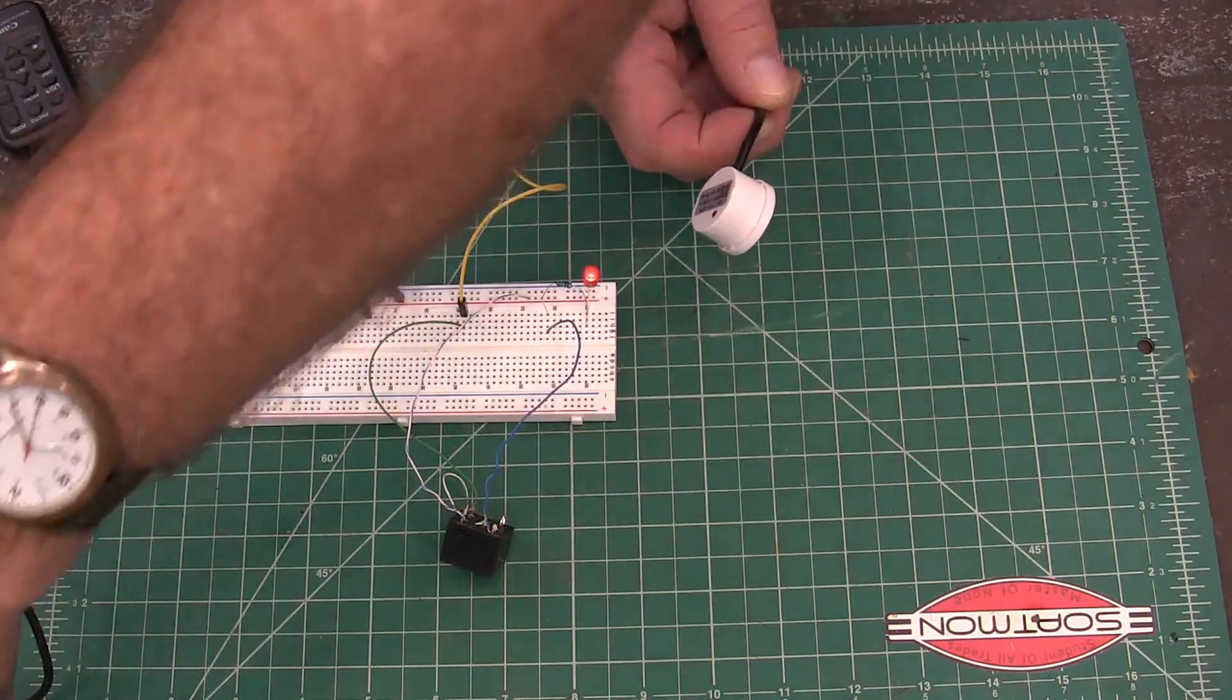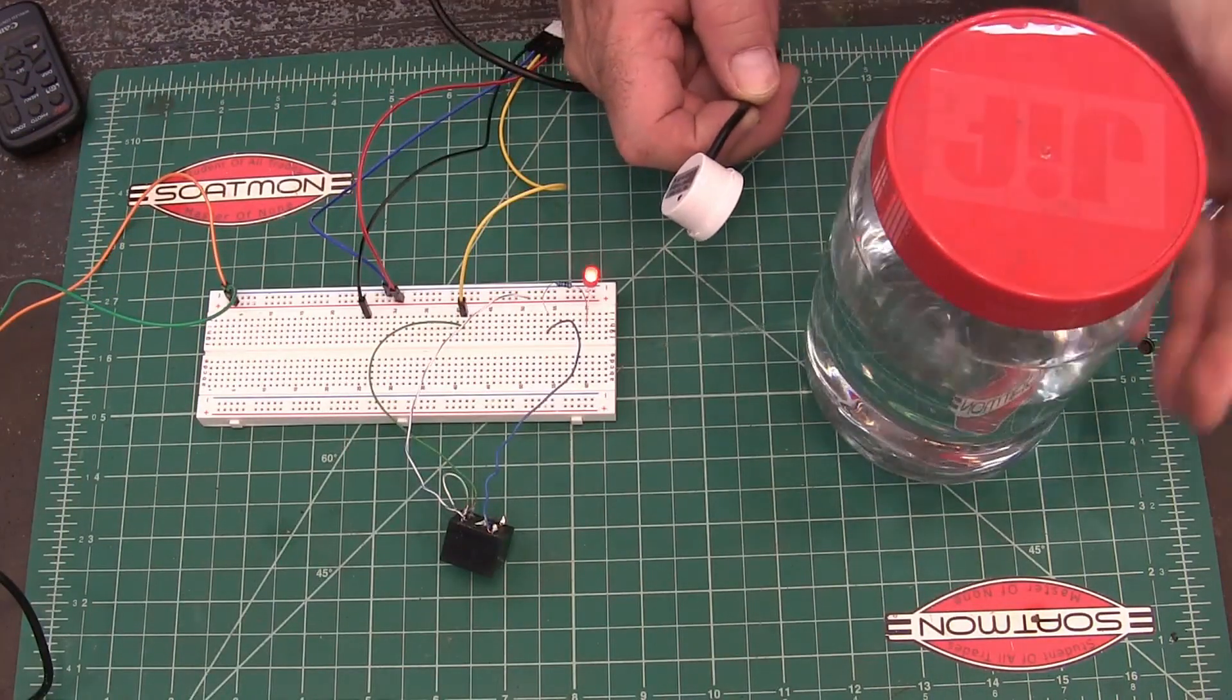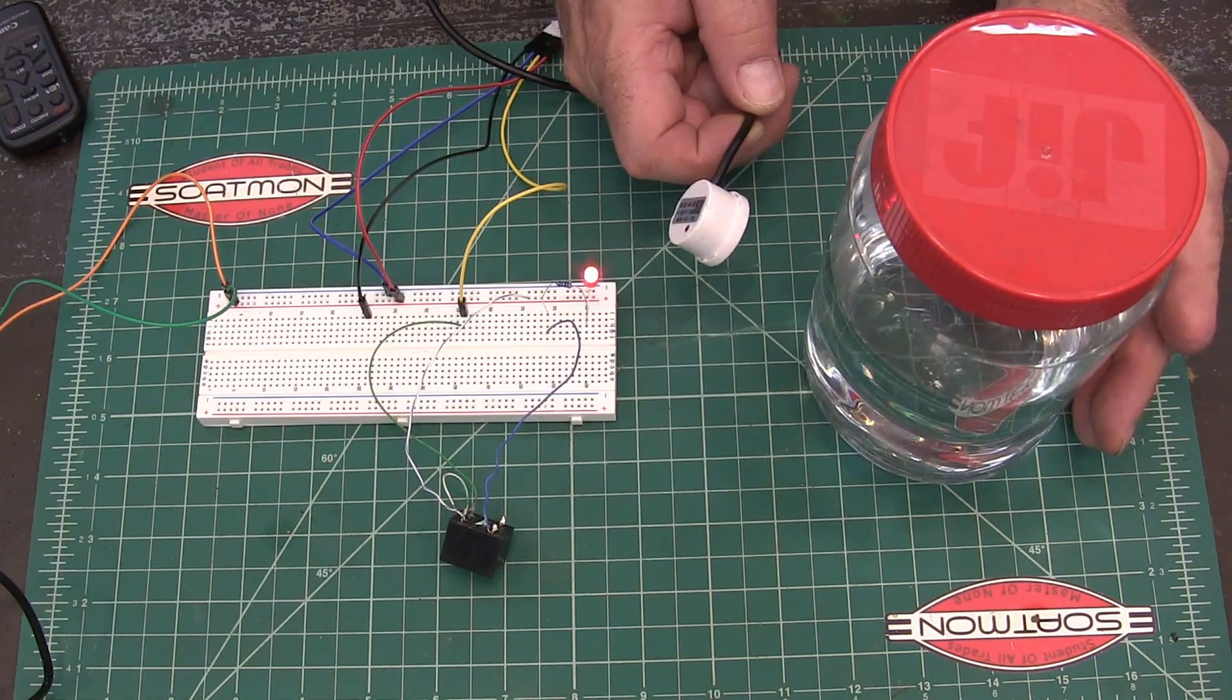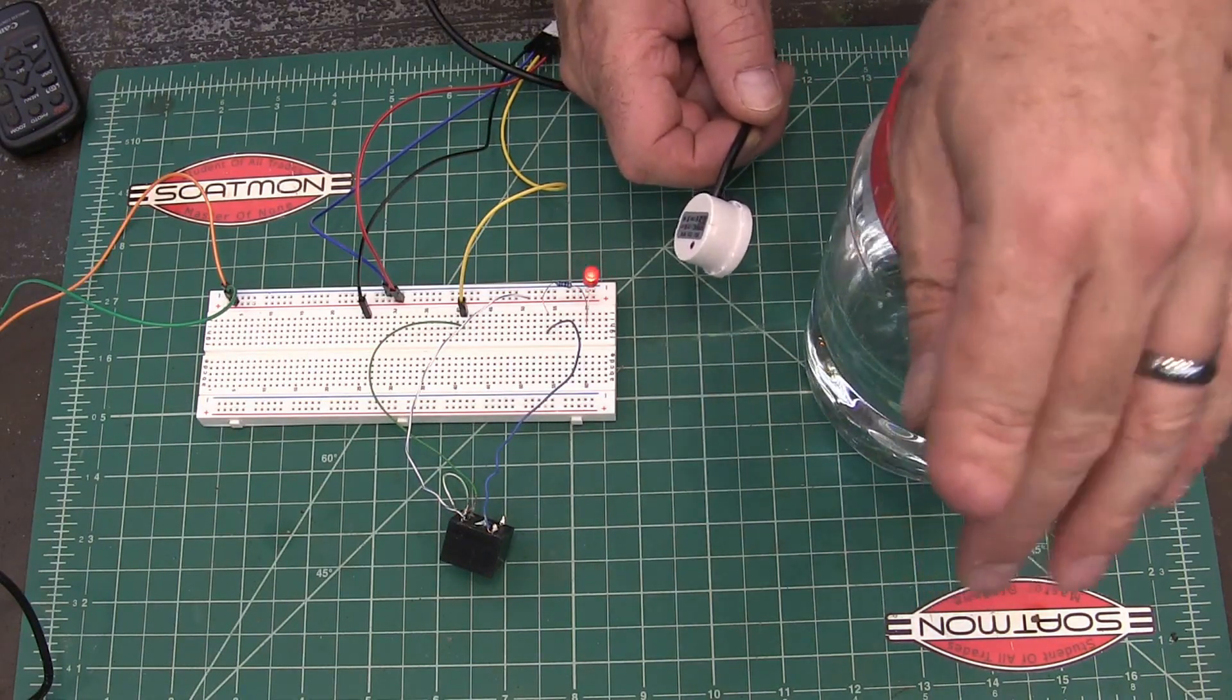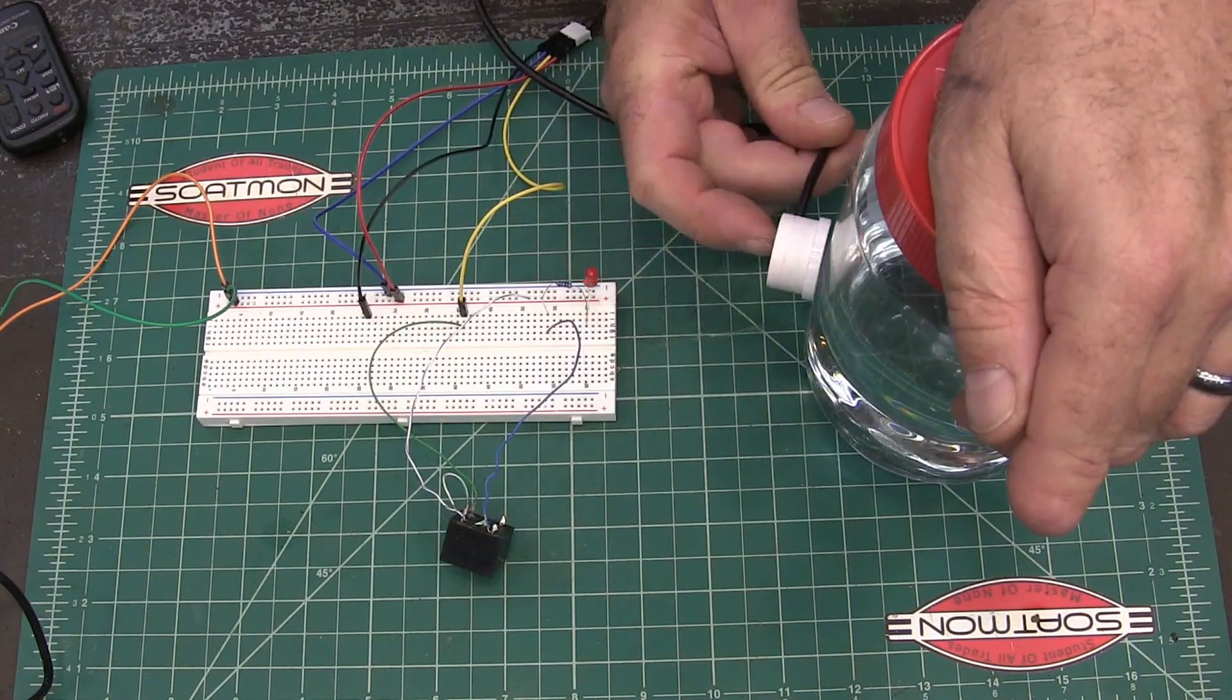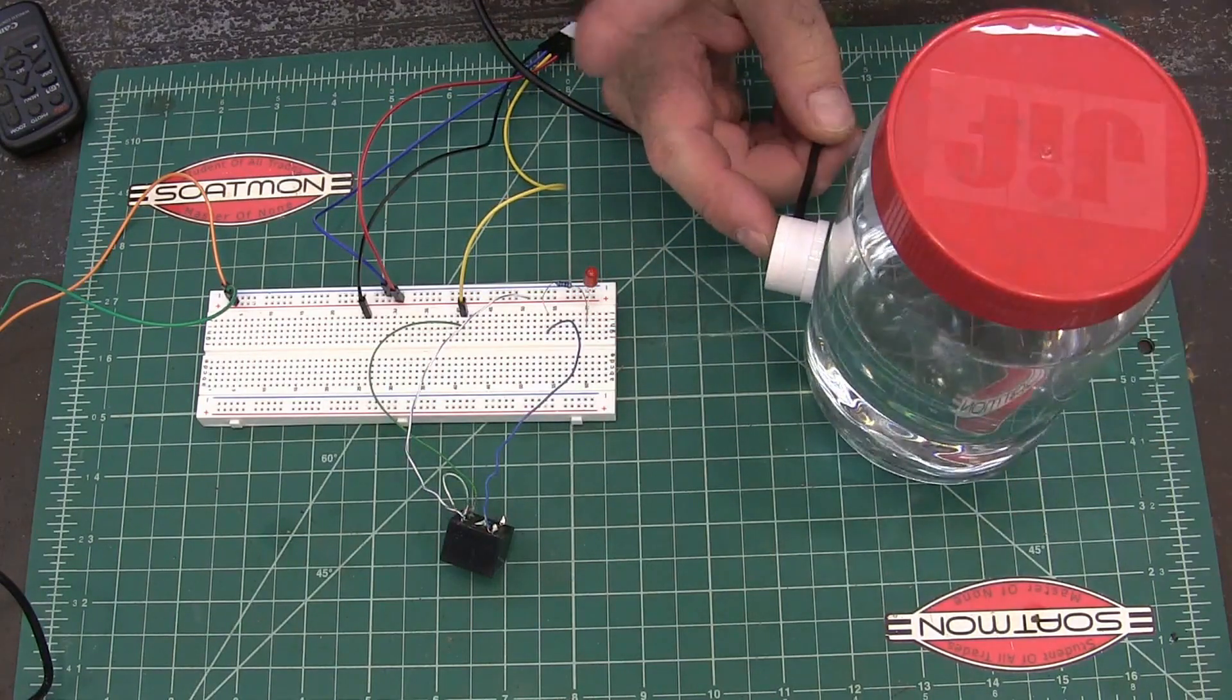But I thought I'd go ahead and show this to you, even though it's kind of a failure for what I was wanting to do, because it's really useful if you needed to do something like run a pump to fill a barrel with water. And then you want this to be on the outside. And when it gets up to a certain level, it'll shut your pump off for you.